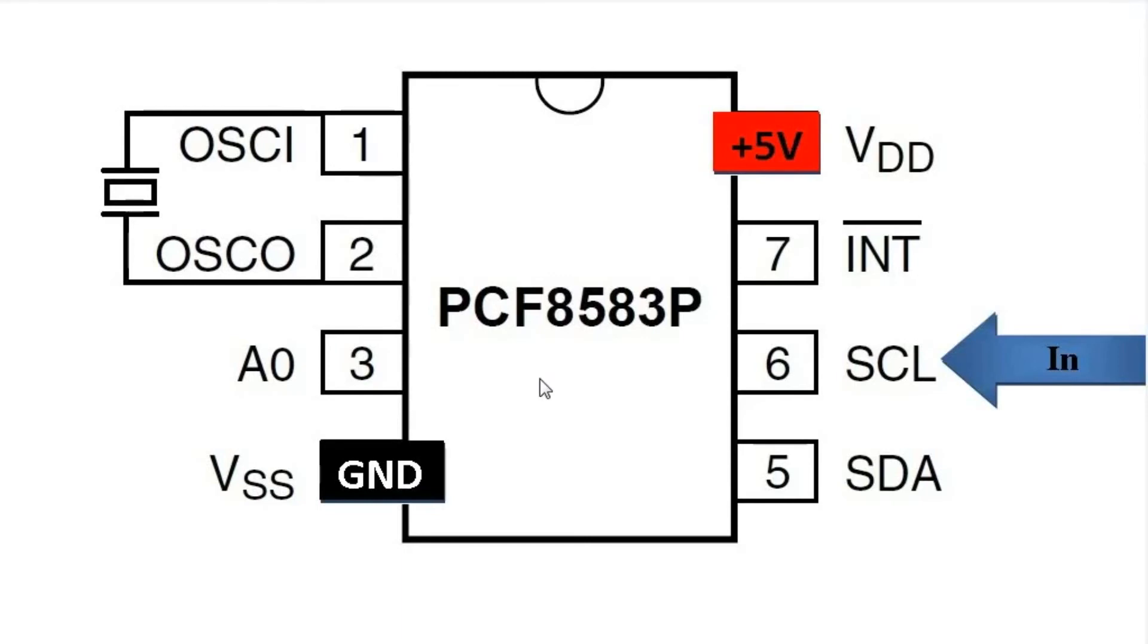Pin number 6 is serial clock input pin. Pin number 5 is serial data input output pin and pin number 3 is A0 which is address input, it is either connected to plus 5V or to the ground. It helps to determine the device address and the last is pin number 7 interrupt pin which we are not going to use in our example today.